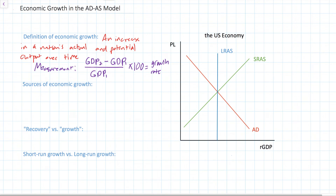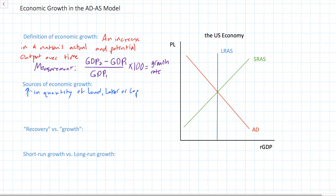Let's talk about the sources of economic growth. Economic growth can be the result of several factors — anything that leads to an increase in the quantity of factors of production in a country. Recall that factors of production refers to land, labor, and capital. So anything that increases the quantity of land, labor, and capital in a country will increase that country's actual and potential output over time and lead to economic growth. Let's break it down — what are some factors that can cause an increase in land, labor, or capital?